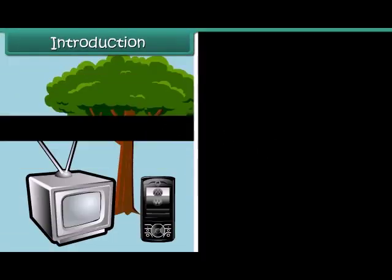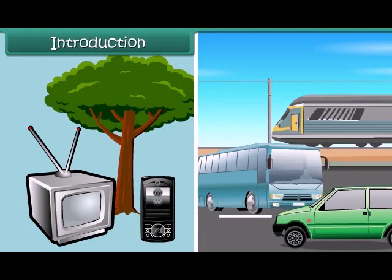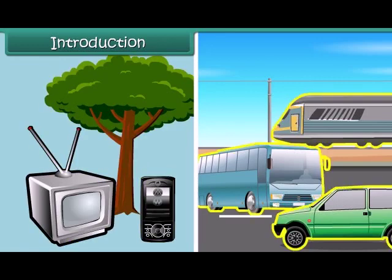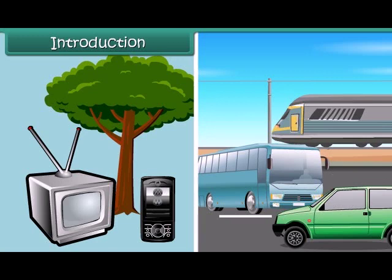Introduction. Look around yourself and you will find objects of different kinds such as television, mobile, trees, cars, buses, trains etc. Objects such as television, mobile, trees etc. are static.